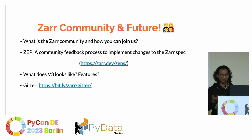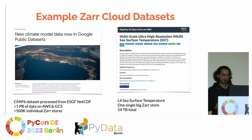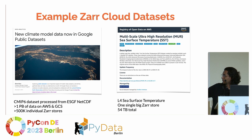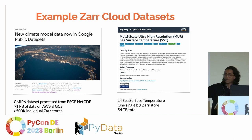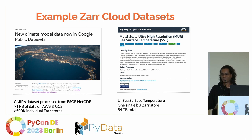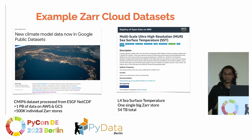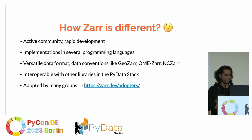Some datasets currently on the cloud: CMIP6, the public climate model dataset — it's one petabyte. And the sea surface temperature dataset hosted by NASA is also 54 terabytes in total — one single ZAR store. You don't need to load the full 54 terabytes to work with it; you can just load a few MBs or GBs.